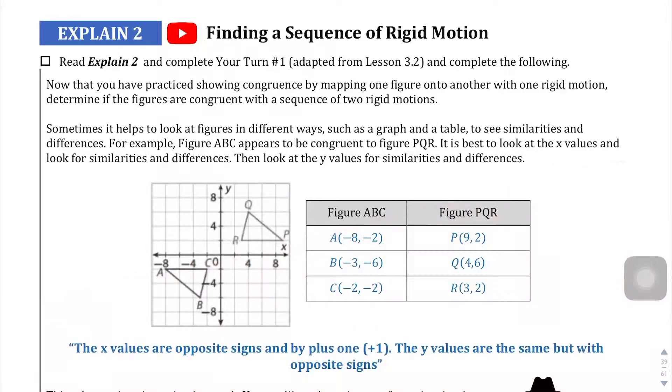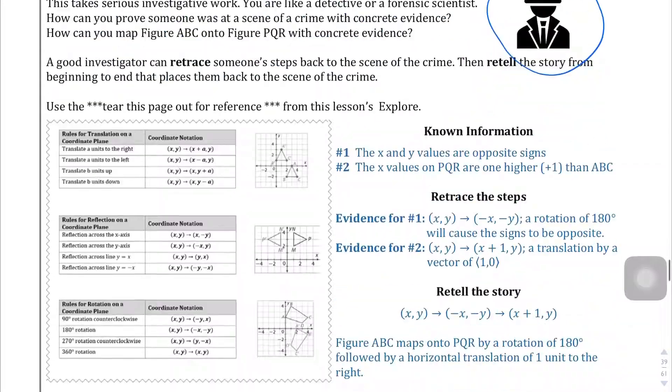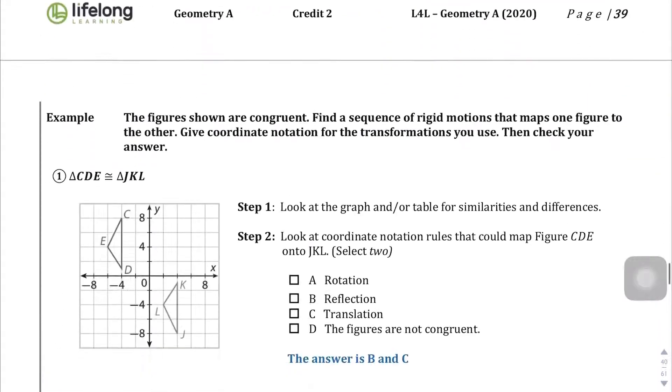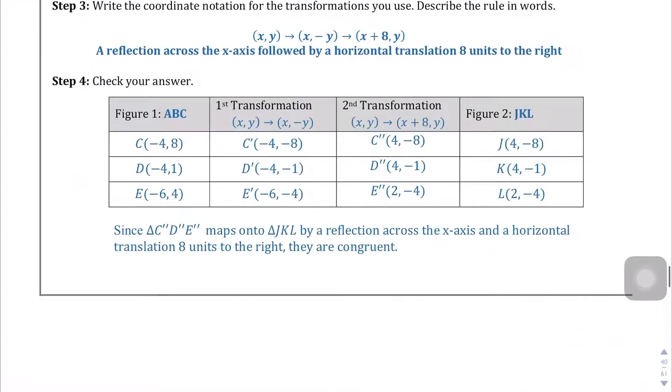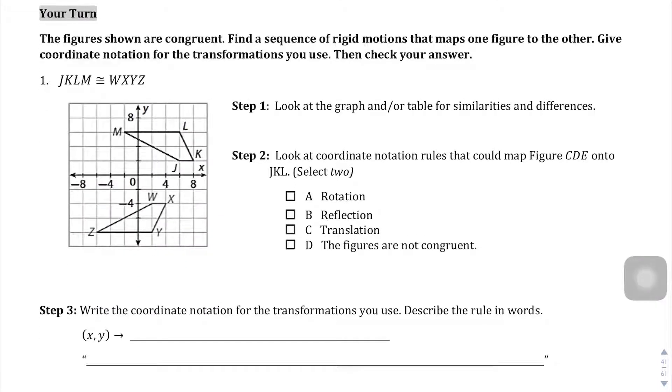All right, here we are at the Explained 2 section for this Geometry A Credit 2, and we're going to find a sequence of rigid motion. So we're going to combine everything that we've learned to figure out how one shape moved into a different place. It can be a bit of a detective story, hence they explain all this picture of a black and white detective. I'm going to assume that you read the Explained 2 section and just jump into the Your Turn section here, and we're going to be in question number one.